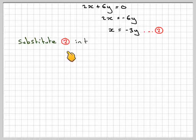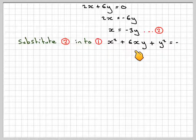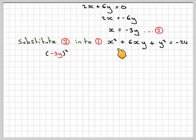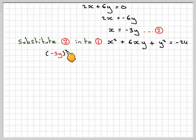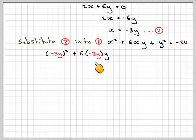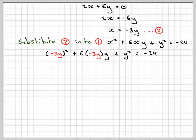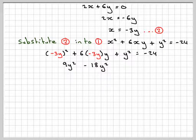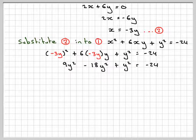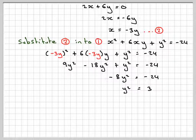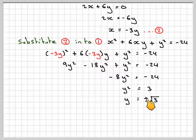So we'll now substitute equation 2 into equation 1, which was x squared plus 6xy plus y squared equals minus 24. So instead of x, we've now got minus 3y, so it's minus 3, put it in brackets, all squared, plus 6 times minus 3y times y plus y squared equals minus 24. So that's going to give 9y squared, 6 times minus 3 times y is going to give minus 18y squared, plus y squared equals minus 24. That's going to give 9 minus 18 plus 1, which is going to be minus 8y squared is minus 24. Y squared will be equal to 3, therefore y will be plus or minus root 3.